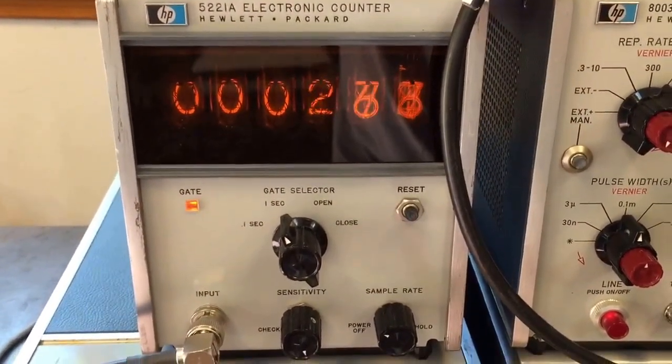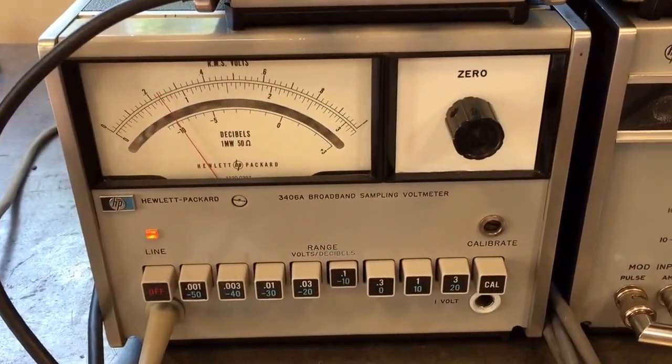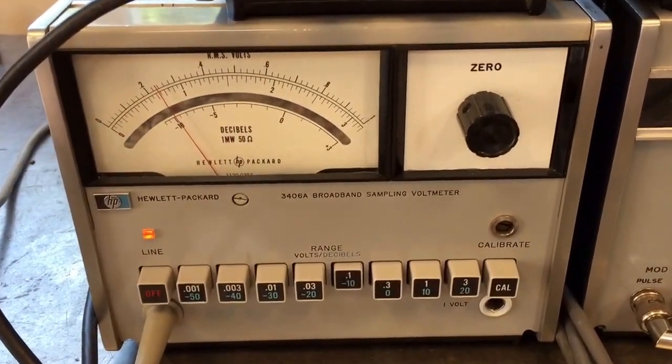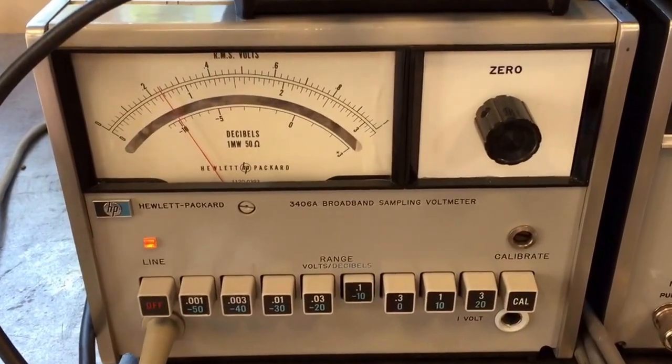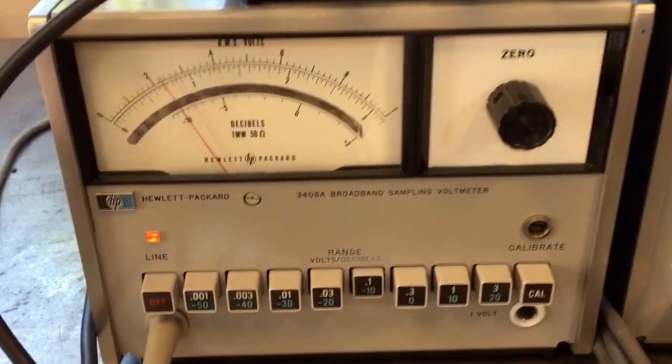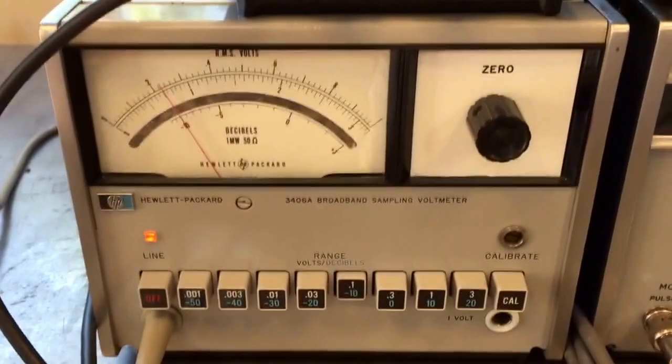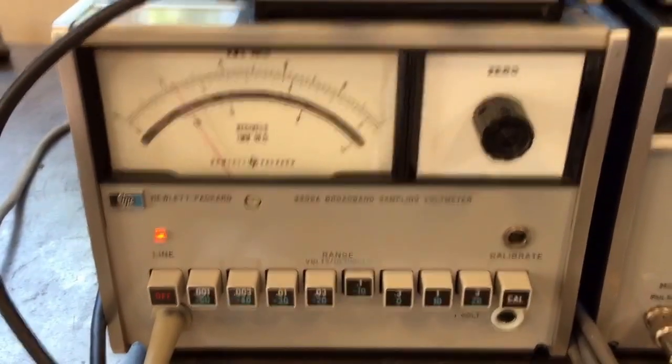Here we've got a 5221A electronic counter. This is counting how many pulses in one second - 400 Hertz. Here we've got a 3406A broadband sampling volt meter. This thing gives an output.